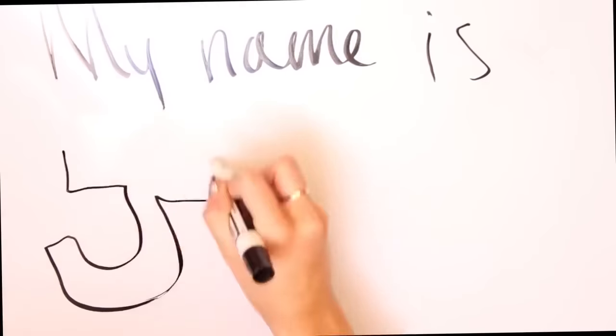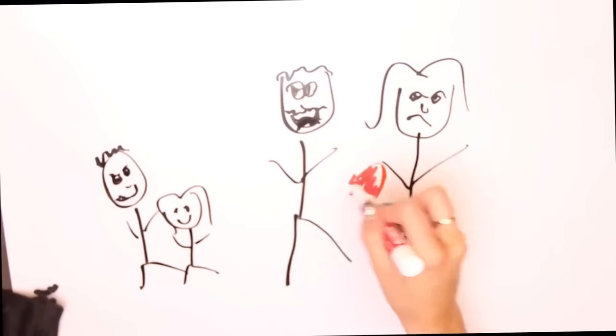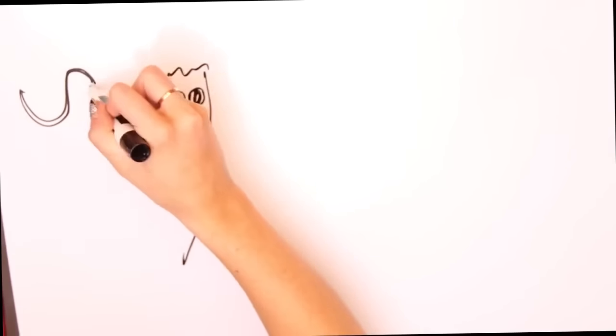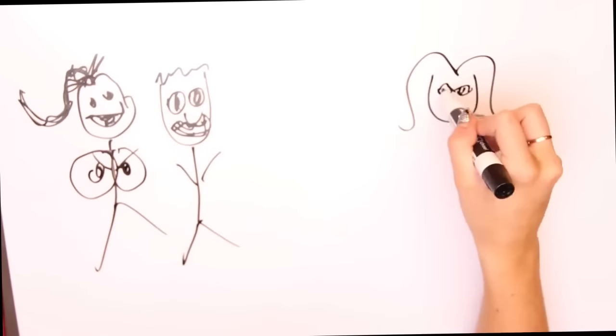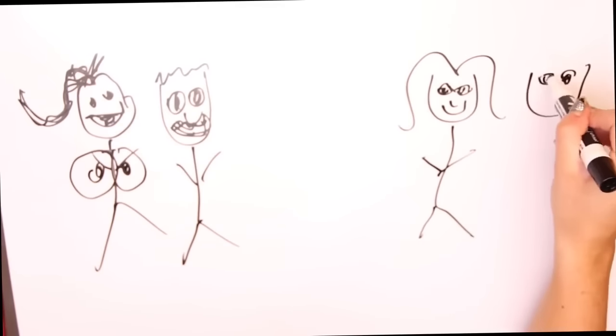My name is Jenna Marbles, and I'm going to draw my life. When we were little, my parents got divorced, but that worked out alright, because my dad remarried, and his wife has big boobies that I would put my face in when I was sad, and my mom's been with her boyfriend for like ever, so everyone wound up pretty happy.